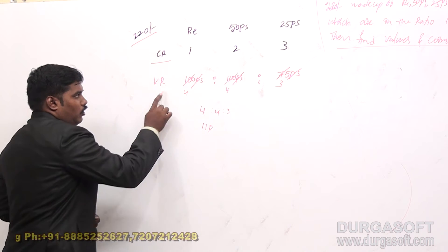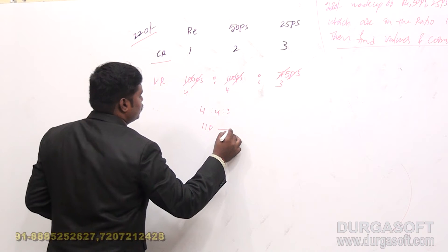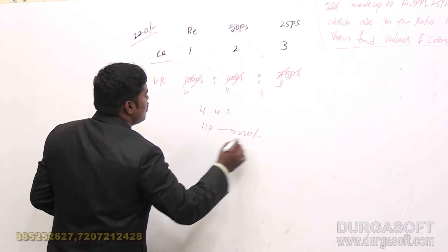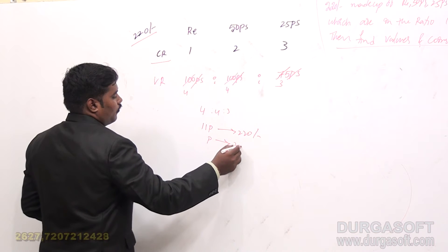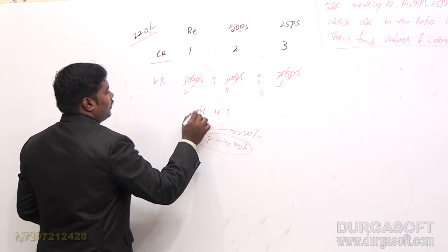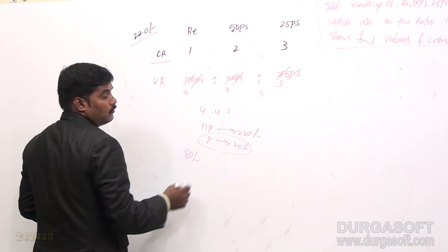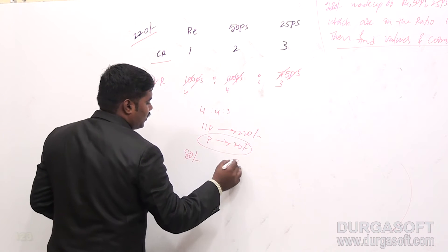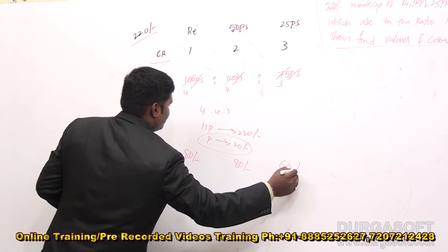The total value is 220 rupees. You have the value ratio and the total value, so you can distribute 220 rupees into 11 parts. One part equals 20 rupees. So 4 parts equals 80 rupees, another 4 parts equals 80 rupees, and 3 parts equals 60 rupees. These are the values of each individual denomination.